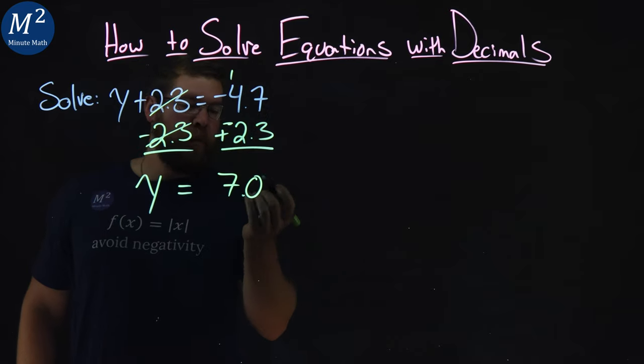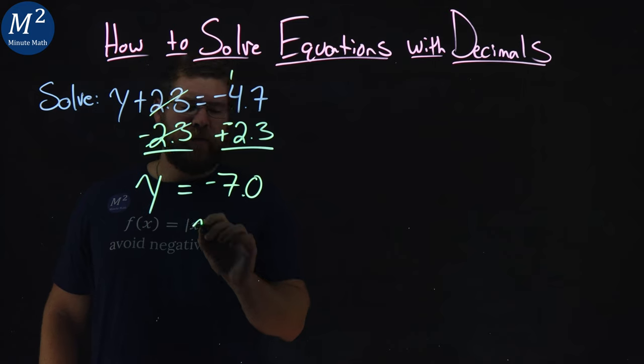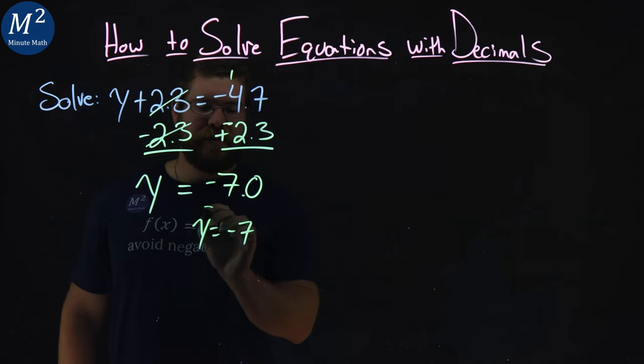Now, we don't really need to write the 0.0 there, but we do need to write the negative. So we can rewrite this as y equals negative 7 right here.